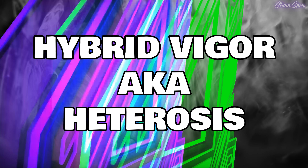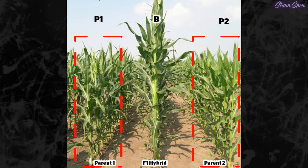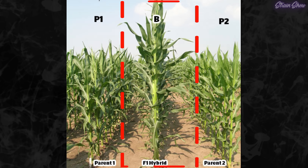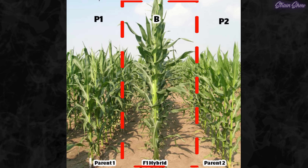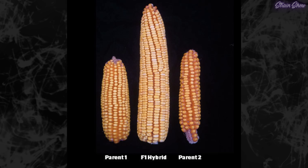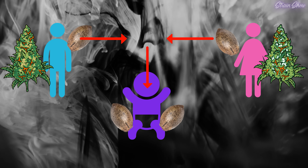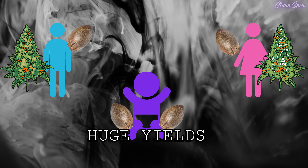Next we have hybrid vigor, also known as heterosis. When two totally different parents are crossed, the first generation — the F1 — often grows faster, stronger, and more productive than either parent. That's called hybrid vigor. If our citrus burst and frosty giant seeds explode with thick stems and huge yields, that's heterosis at work. I just mentioned F1s without explaining what F1s are, and we're going to get there in just a second.